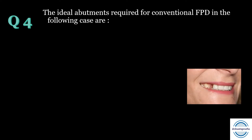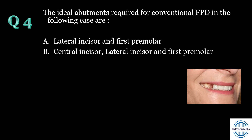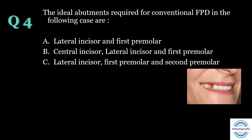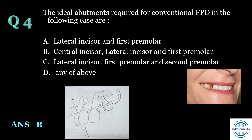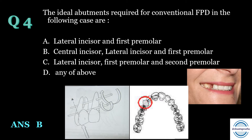Question number four: The ideal abutments required for a conventional FPD in this case are — A) lateral incisor and first premolar, B) central incisor, lateral incisor and first premolar, C) lateral incisor, first premolar and second premolar, or D) any of the above? The answer is B — central incisor, lateral incisor and first premolar. This is a canine-missing case. FPD replacing canines is difficult because the canine often lies outside the inter-abutment axis. The lateral incisor is the weakest tooth in the arch and the first premolar is the weakest posterior tooth, so we include the central incisor. Note: if the question asks for ideal treatment, the answer would be implants.